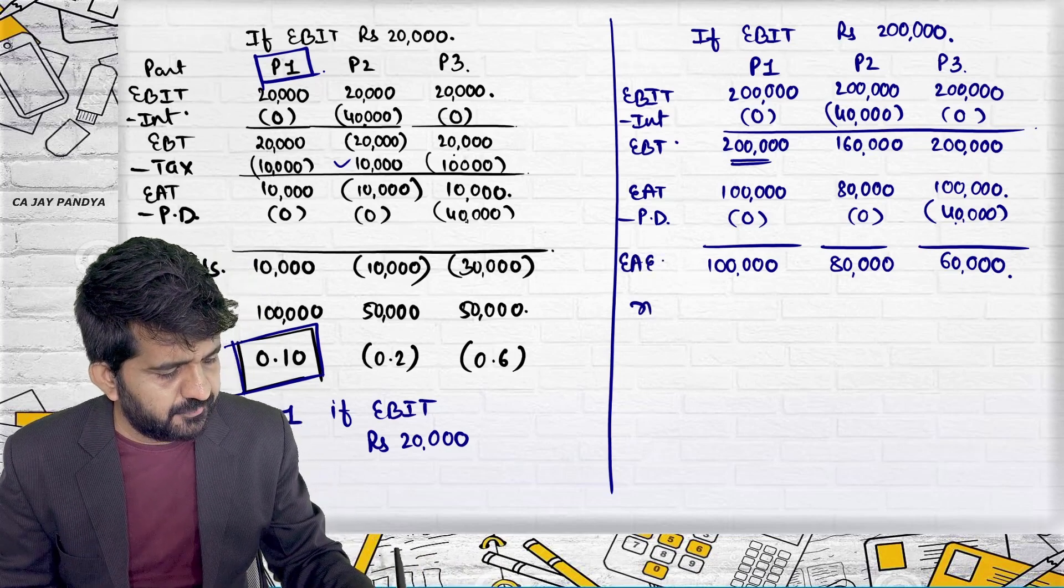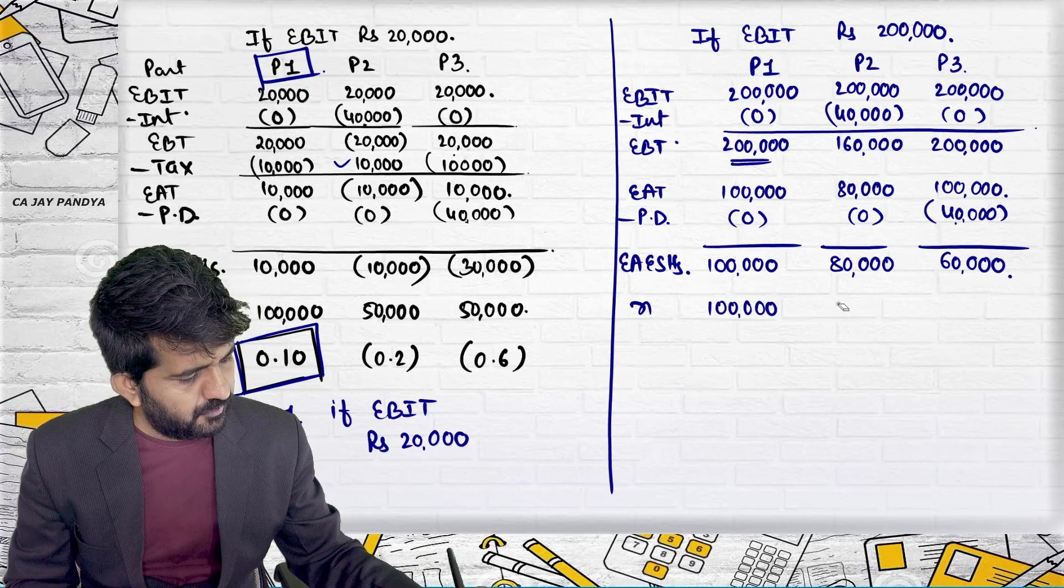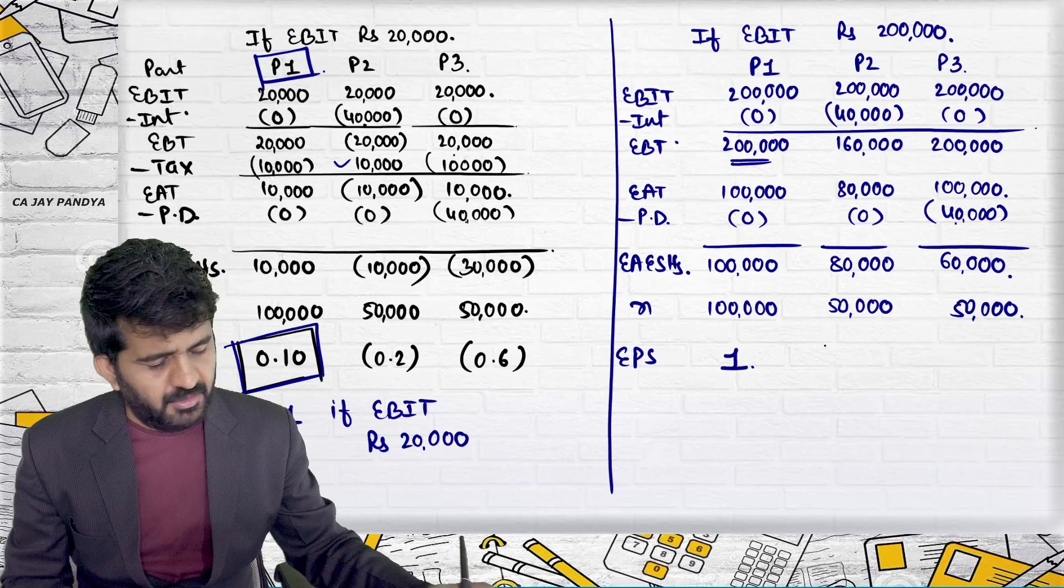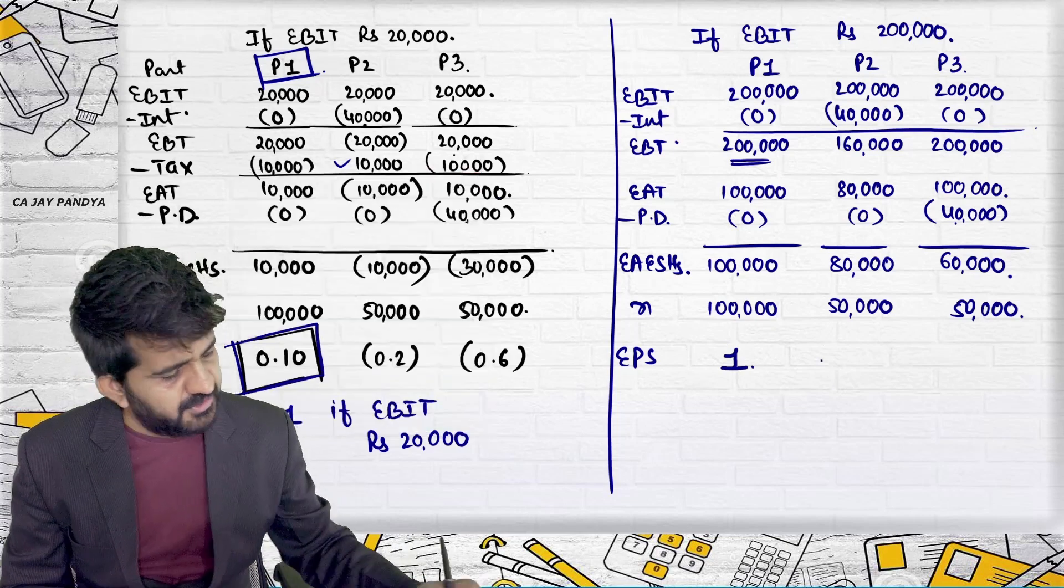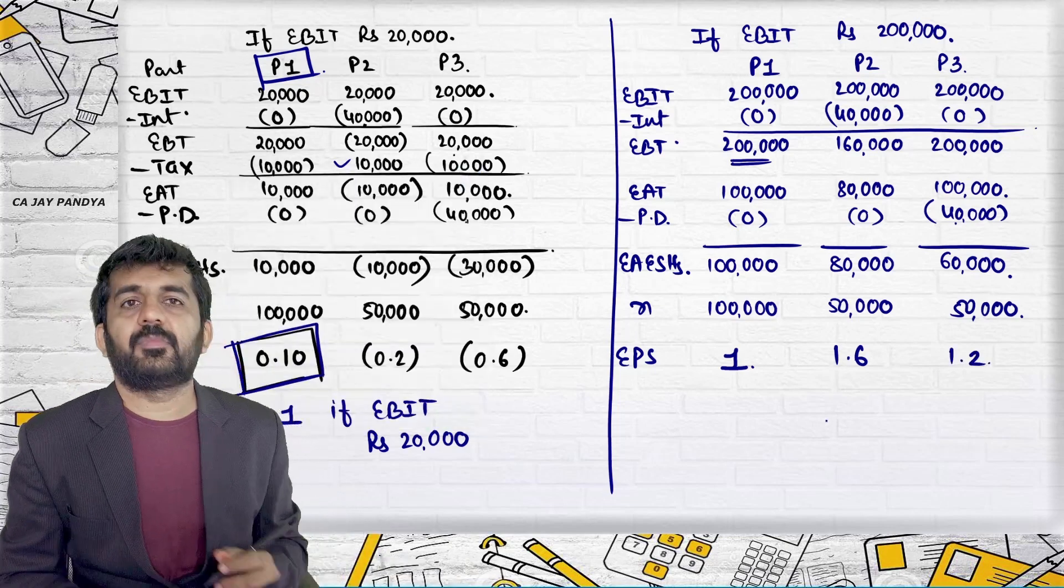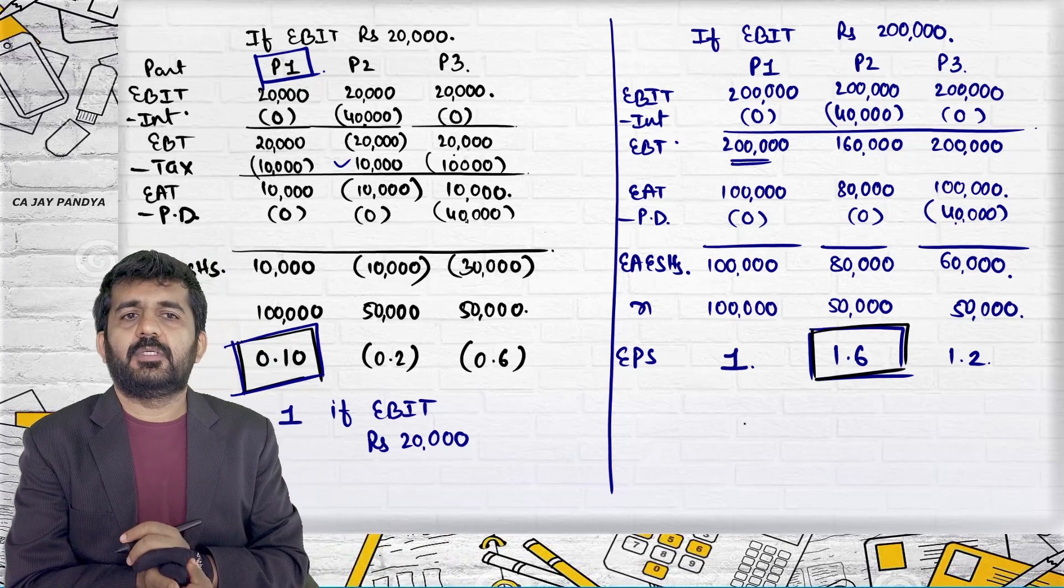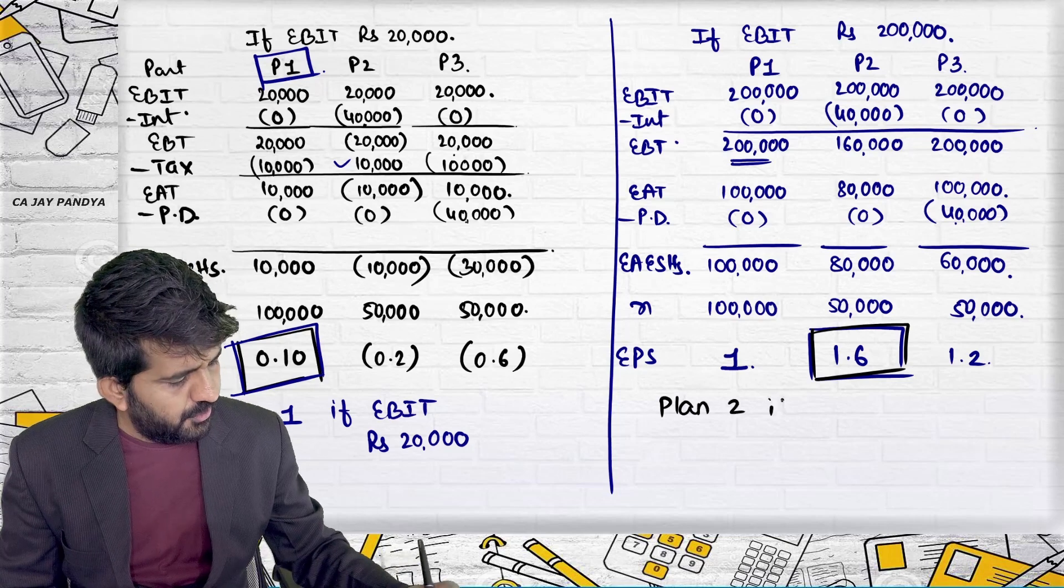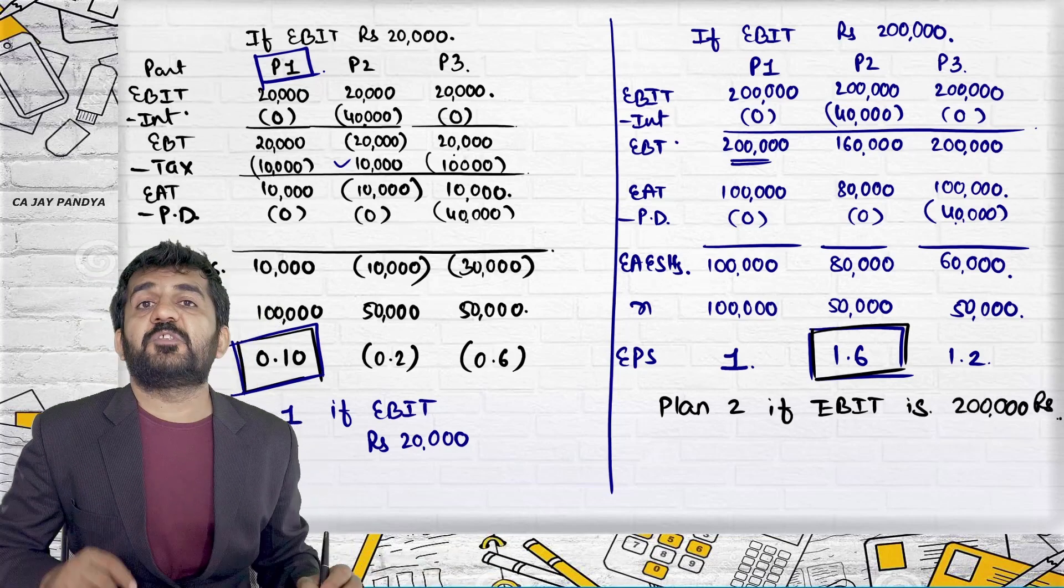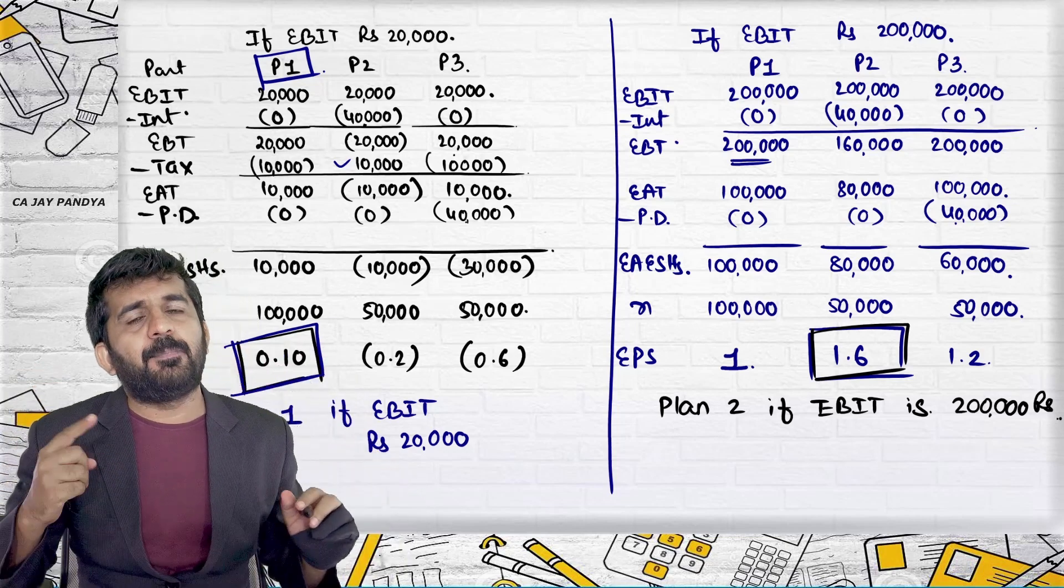Number of shares does not change. Because your plans are remaining same. 1 lakh. 50,000. And 50,000. EPS. Here it will be 1. Here it will be 80,000 divided by 50,000. This is 1.6. And here it will be 60,000 divided by 50,000. This is 1.2. Where it is highest? Over here. So your plan 2. If EBIT is 2 lakhs. So if some economist says that your EBIT is going to remain 2 lakhs and you are having only these 3 plans, then plan 2 is to be selected. Alright.